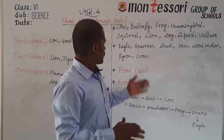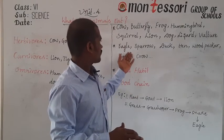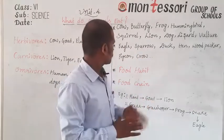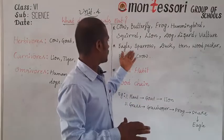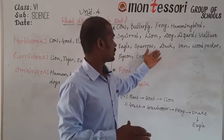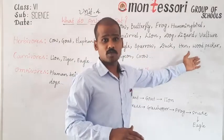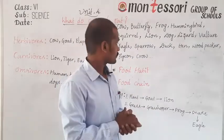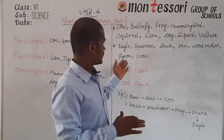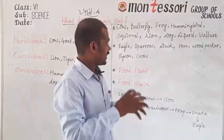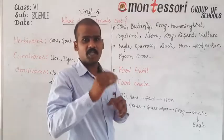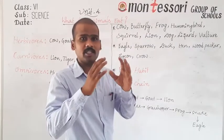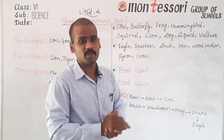Here are different examples of birds: eagle, sparrow, duck, hen, woodpecker, pigeon, and crow. These different birds have different shapes of beaks and they also eat different types of food.